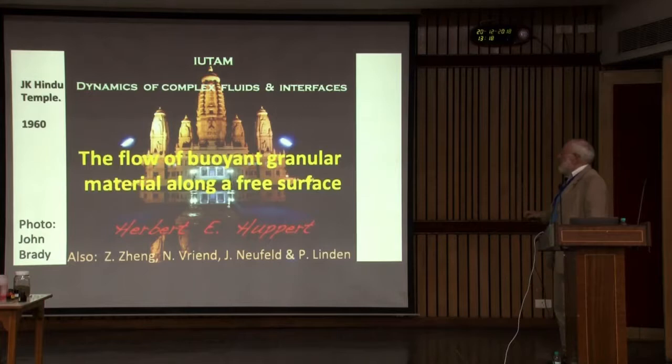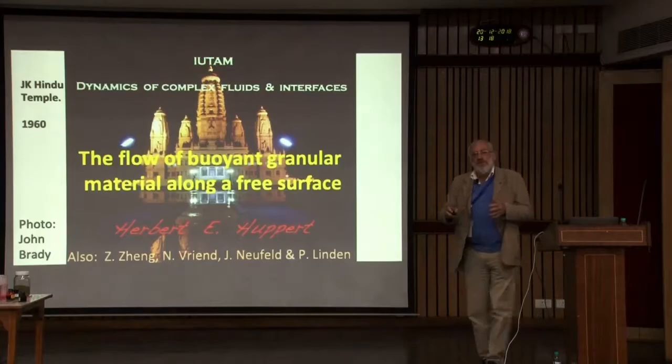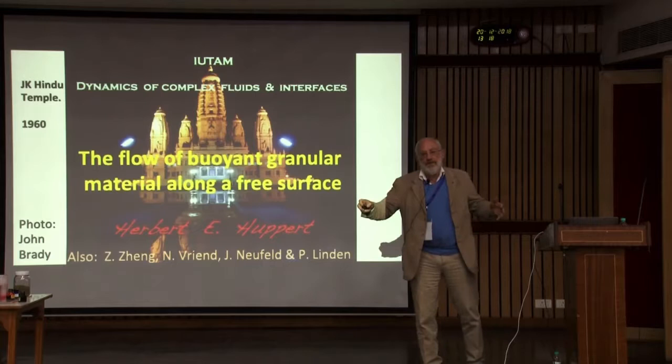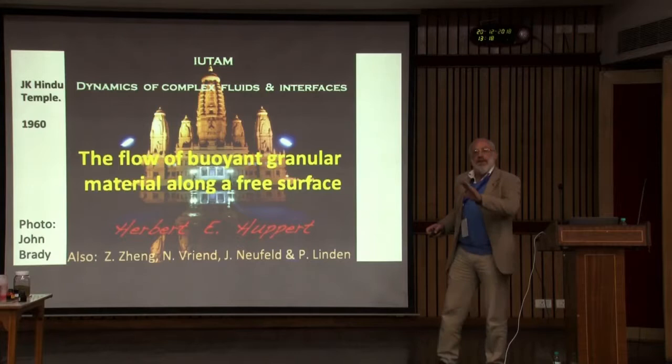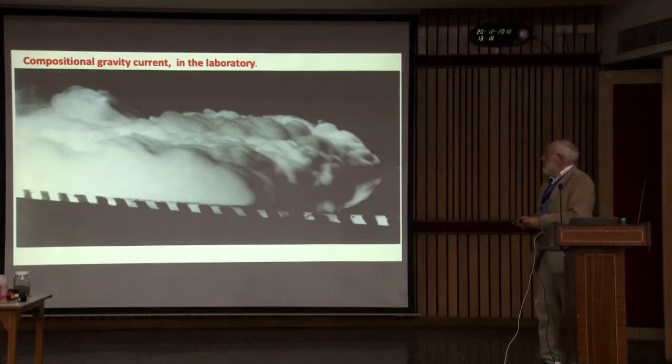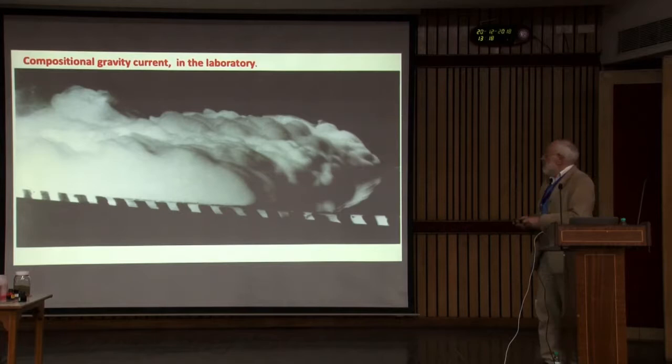I'm going to tell you about the flow of buoyant granular material along a free surface, which is an example of a gravity current - a fluid motion that moves mainly horizontally due to the vertical component of gravity and differences in density. Just to give you an indication, I'd like to show you some examples.